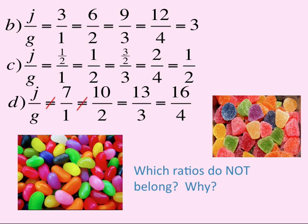For instance, seven is not equal to five, which is not equal to four and one-third, which is not equal to four. So the ratios that don't belong are for this last equation.